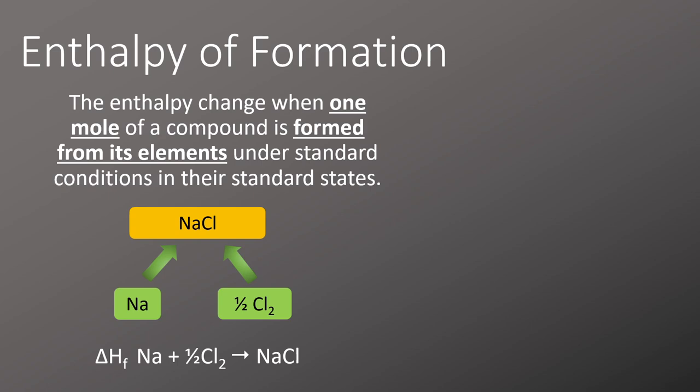In another example where we take aluminium and oxygen and combine that together to make aluminium oxide and write out the equation again, you can see we've used the right multiples of the reactants to ensure we only get one mole of the products.